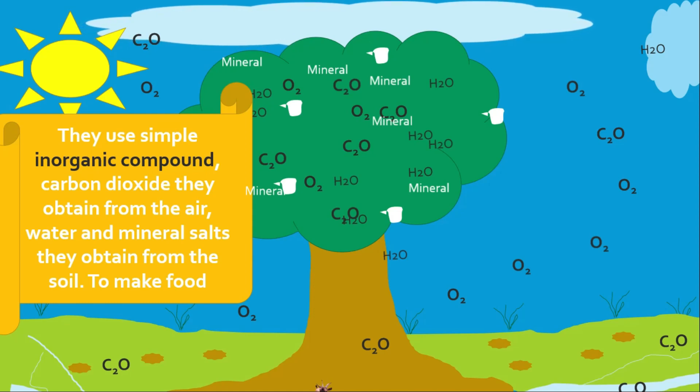Osmosis is responsible for moving water from the soil to the leaf. Active transport transports the minerals from the soil water.